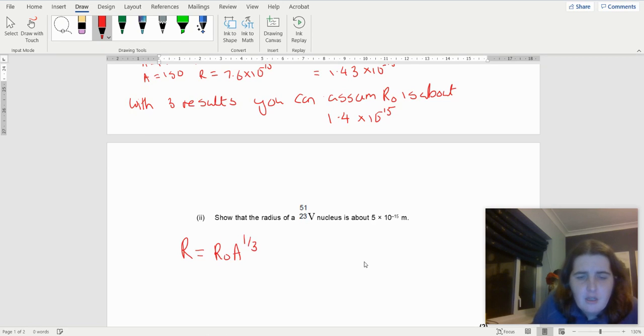I'm going to use the R₀ from above. So I've got 1.4 × 10⁻¹⁵ times by 51 to the power of a third. So 51 to the power of a third times by 1.4 × 10⁻¹⁵.